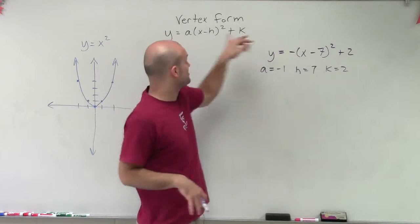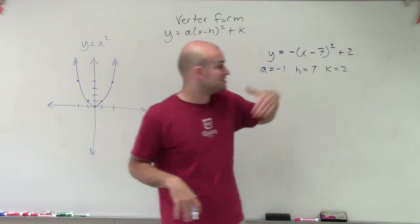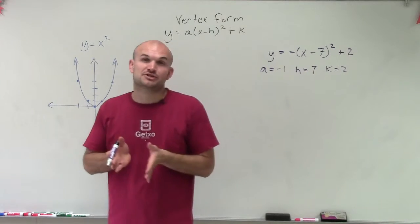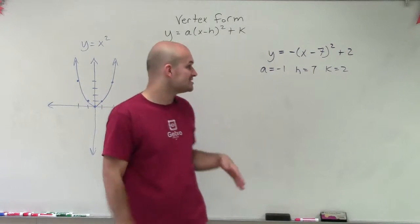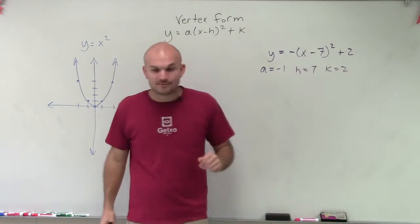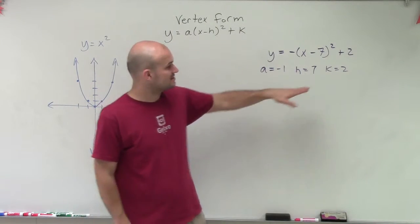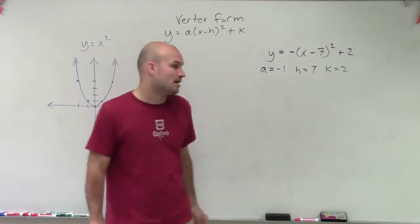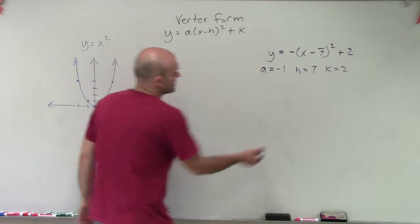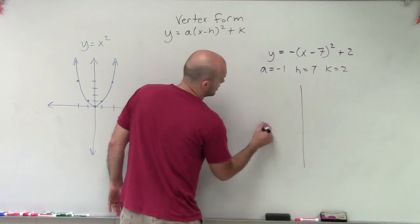H is going to be positive 7, because remember, it's x opposite of h. So it's going to be positive 7. That means I'm going to shift my graph 7 units to the right. And then k is going to be my shift vertically. And since that's positive, that means I'm going to shift my graph 2 units up. So let's go and take a look at this and let's see what it's going to look like.